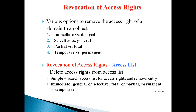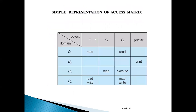What is the basic representation of access matrix? Access matrix provides a general model of protection. It is just a mechanism provided by the operating system for protection of your resources, and it does not impose any specific protection policy on the users. The policy has to be decided by the users only, but the mechanism has been provided through this access matrix.